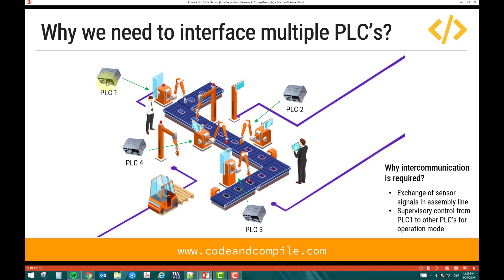For example, if I'm at PLC1 and the whole station is off and not running, and I want to give a run command which should send a run command to all PLCs — it doesn't matter if there are four, five, or 100 — one could be a supervisor PLC which controls the operation mode of all other PLCs. That is where we also need intercommunication. So these are the two basic reasons to have intercommunication.